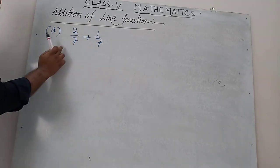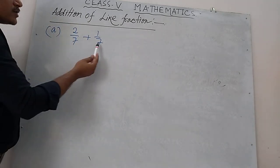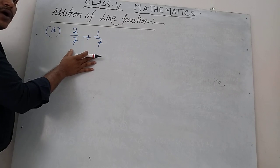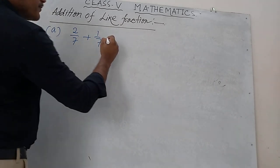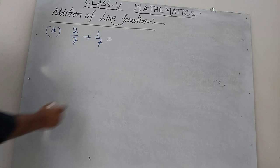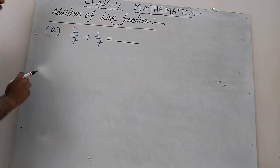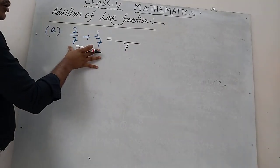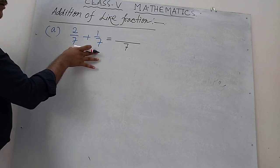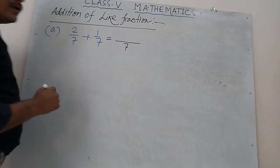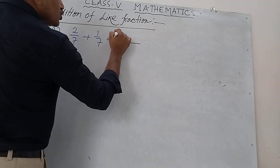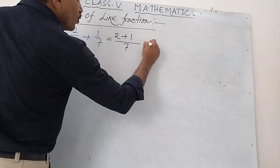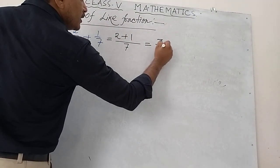These two fractions are like fractions because their denominators are the same. So how can we add? It is very easy. Just draw a line and write the denominator as 7, since both denominators are equal to 7. The numerator will be 2 plus 1, which equals 3. So the answer is 3 by 7.